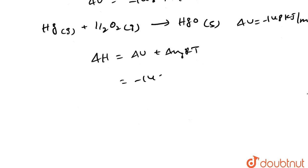If we substitute the values in this formula, delta U value is minus 148 kilojoule per mole and delta N value is minus 3 by 2, which multiplies with R value 8.314 divided by 1000 and multiplies with 298. Then this becomes minus 151.7101.